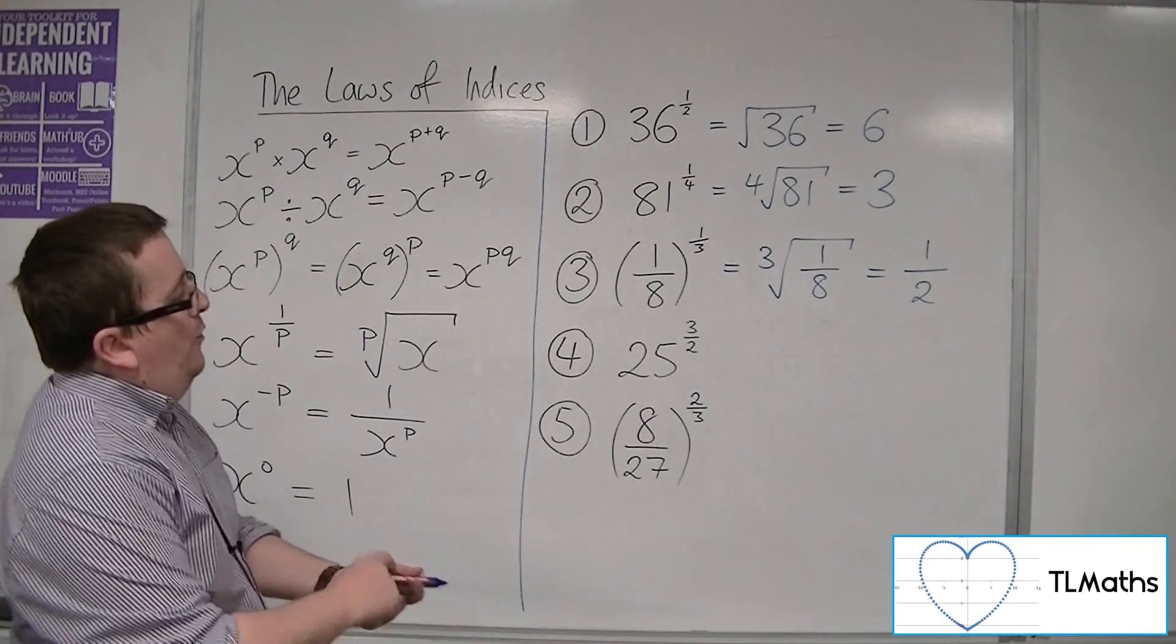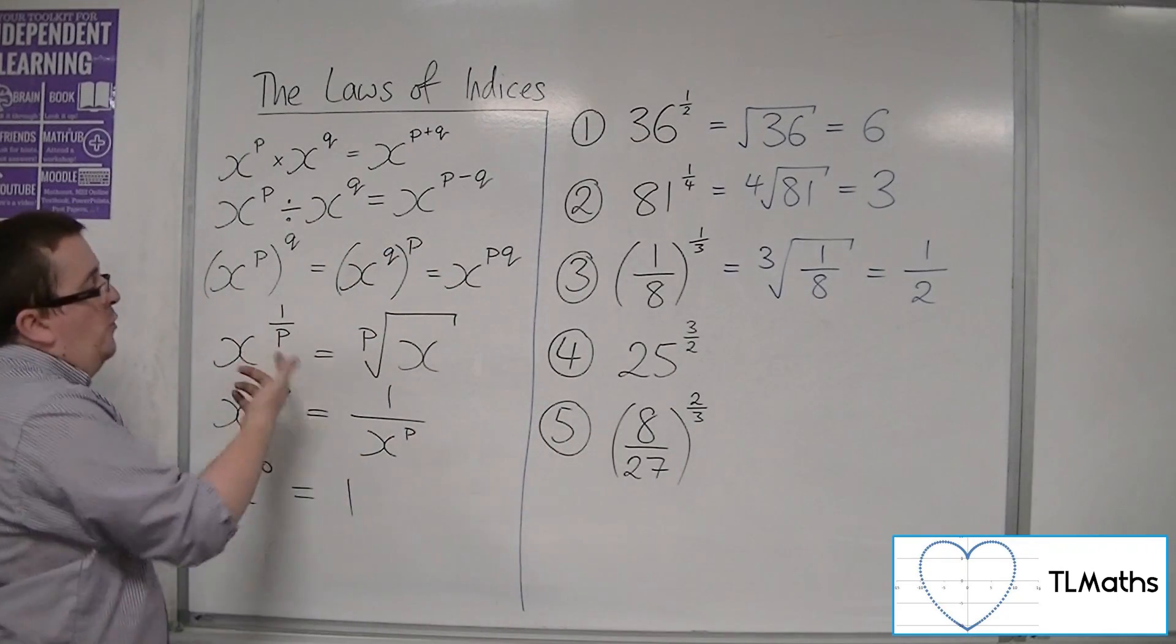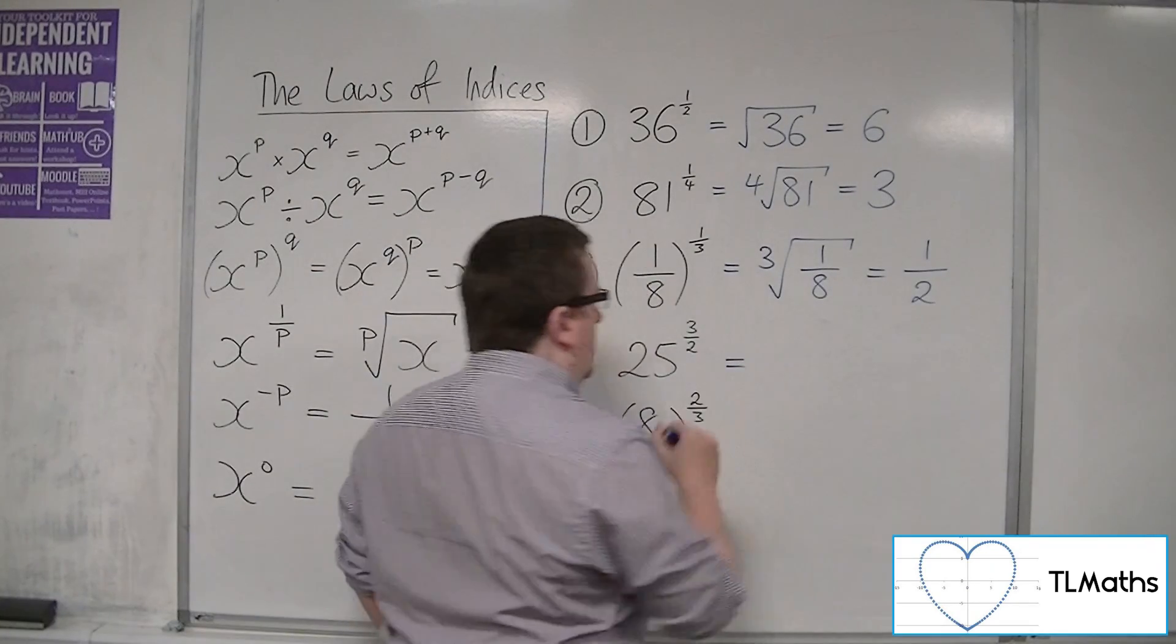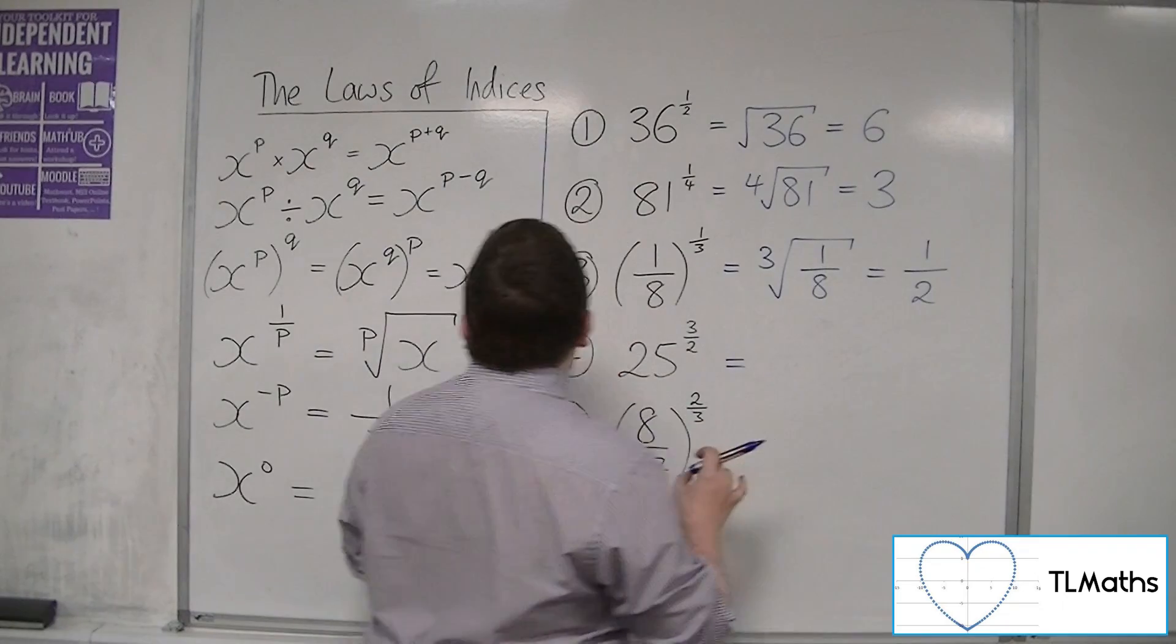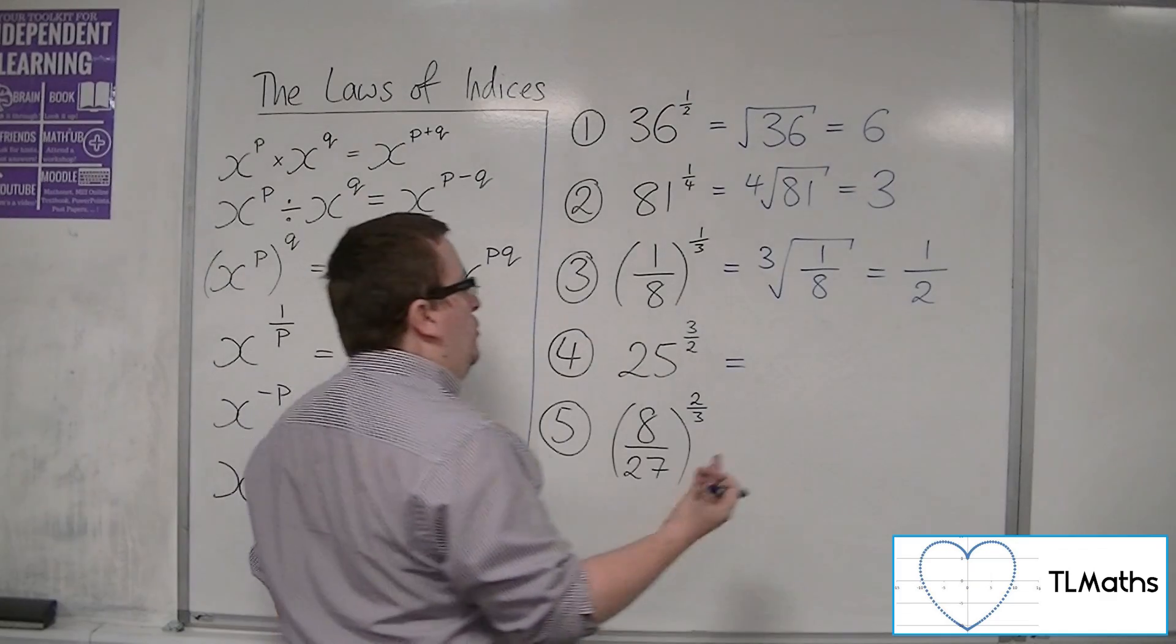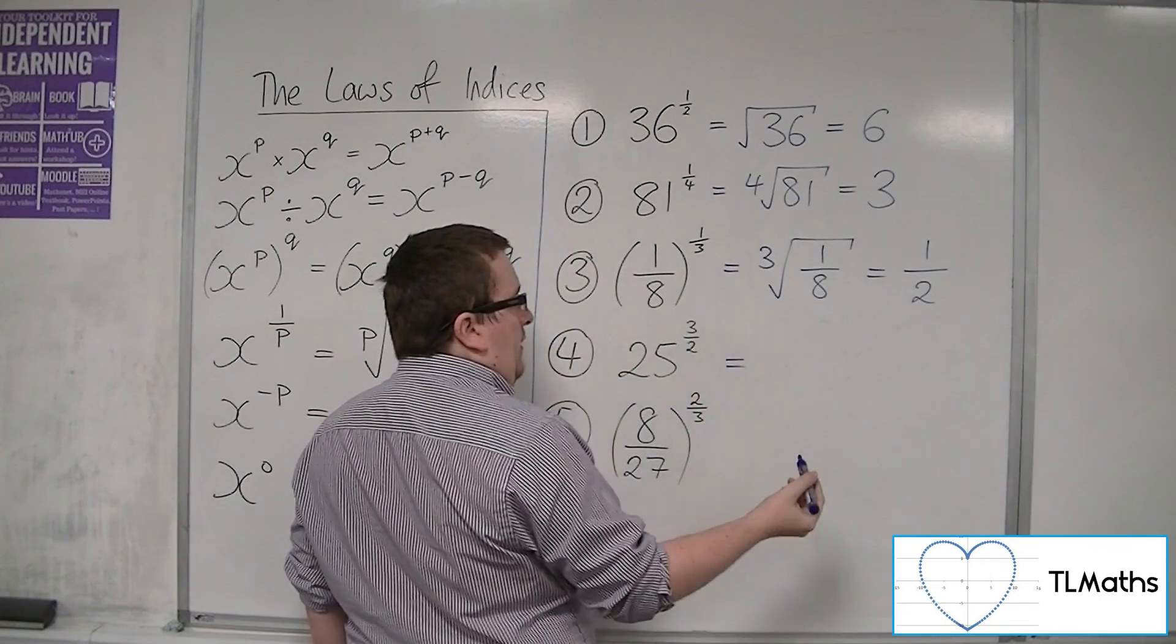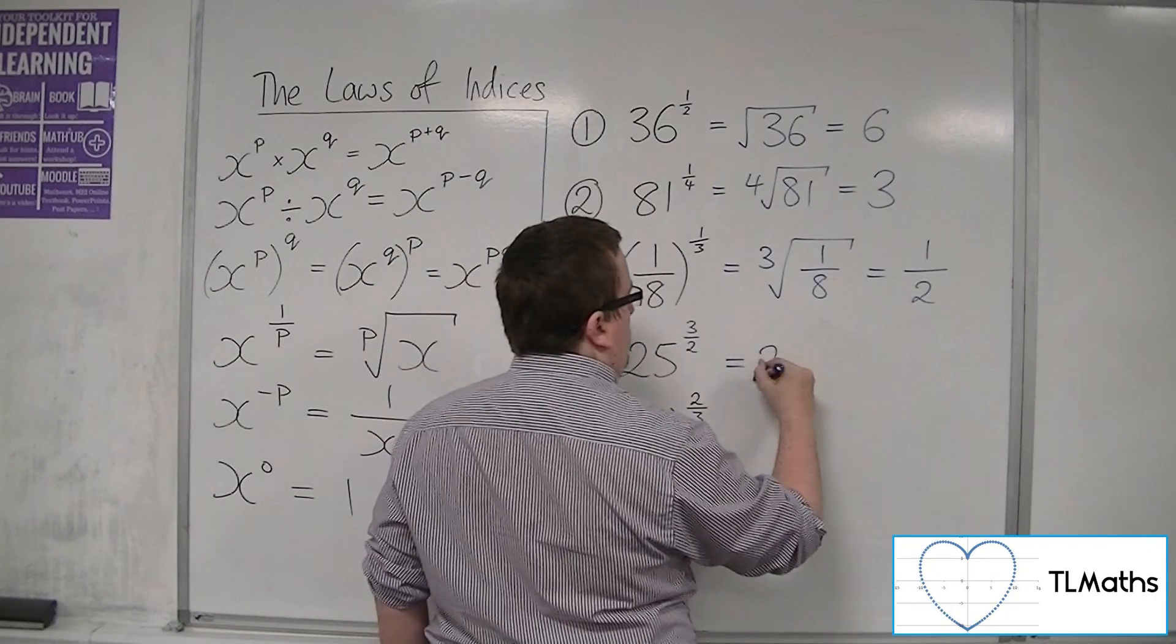Now we start to get a little bit more fiddly, because we've got the 3 halves. We don't have a fraction of the form 1 over p now. So you've got two choices, because it's all coming down to this rule here. The 3 halves you can either write as 3 times 1 half or 1 half times 3. So let's write that down, 25 to the 3 times 1 half,